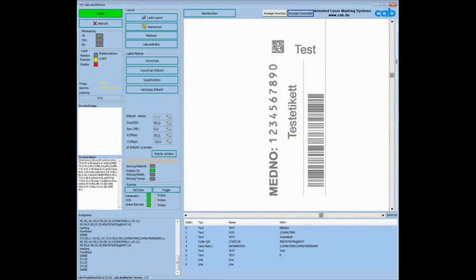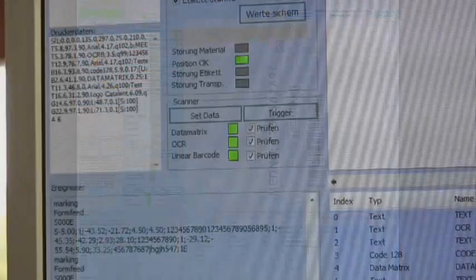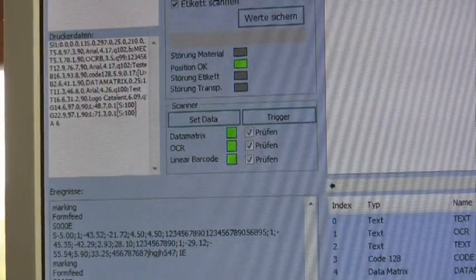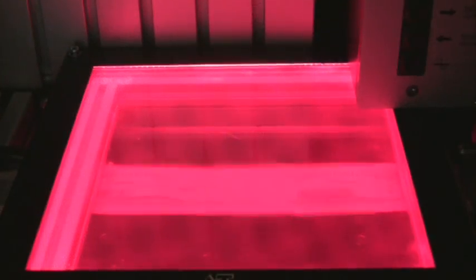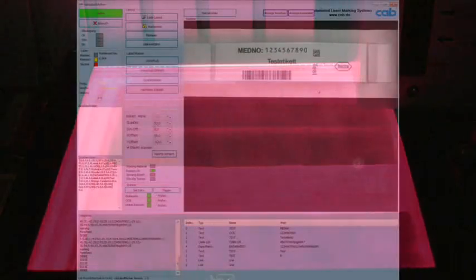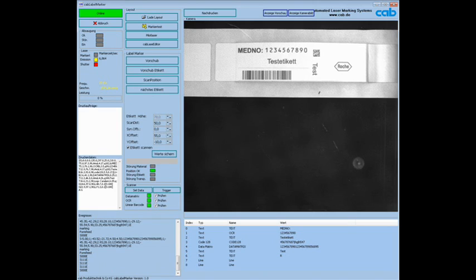The current label is displayed on the screen. The operator has the possibility to select in the software user interface which type of objects should be evaluated. On request the camera shows the preview of the respective label.